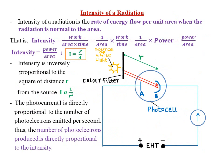The intensity of radiation is the rate of energy flow per unit area when the radiation is normal, or perpendicular, to the area. Intensity equals work divided by area multiplied by time. Separating these: work over time gives power, so intensity equals power divided by area. In symbols, I = P/A.